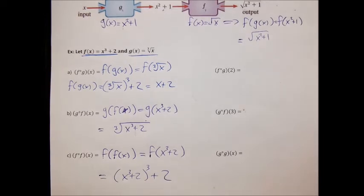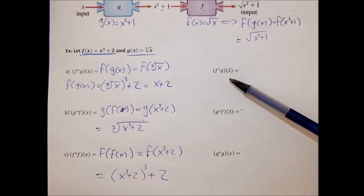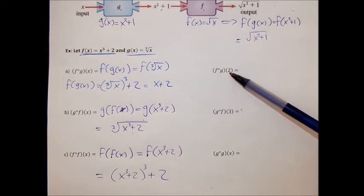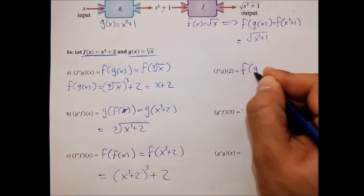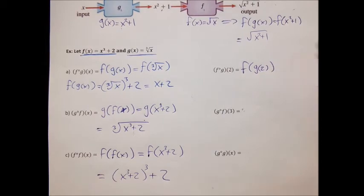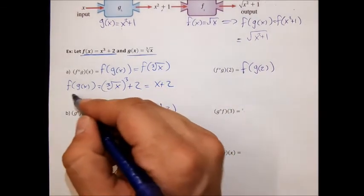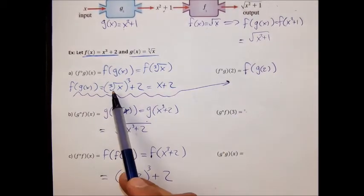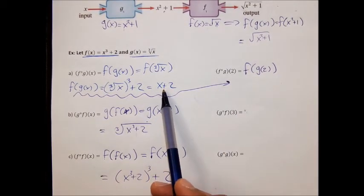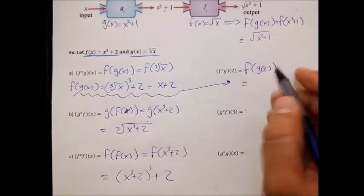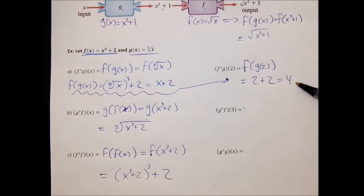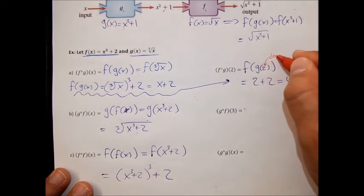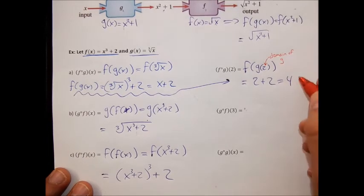What about plugging numbers into composite functions? For f of g of 2, the 2 must be in the domain of g. We take the function f of g that we already found — which was x plus 2 — and plug a 2 in. So this equals 2 plus 2, which is 4. And 4 must be in the range of f. So 2 is in the domain of g, and 4 is in the range of f.